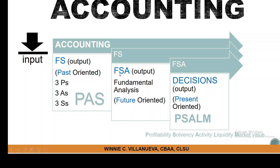Since your output would be a decision, it will be facilitated by preparing financial statement analysis, which we are going to do in class — what we call fundamental analysis. Technically speaking, the results would be used for the future, although the basis is the financial statement, which is PASS-oriented. The decisions based on financial statement analysis would assess profitability, solvency, activity, liquidity, market competitiveness, and market value of the firm — what we call SALB. The tool we are going to use is financial statement analysis.